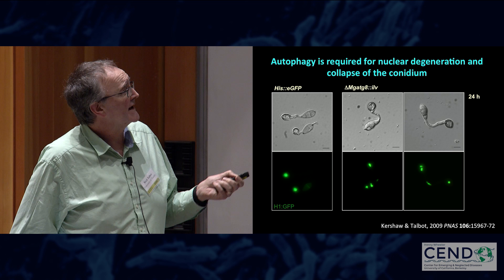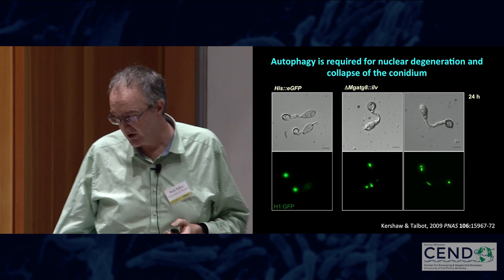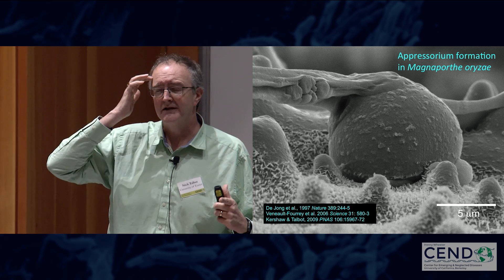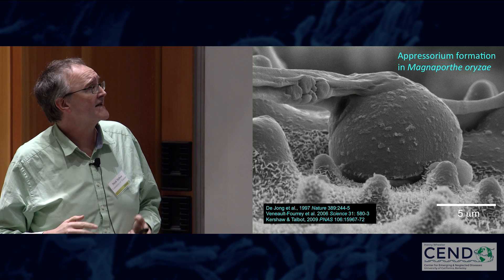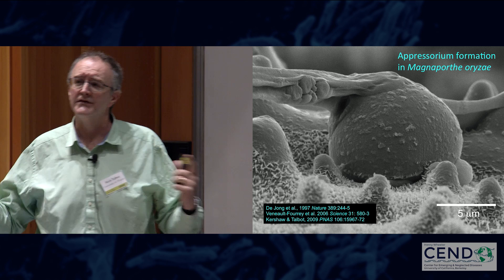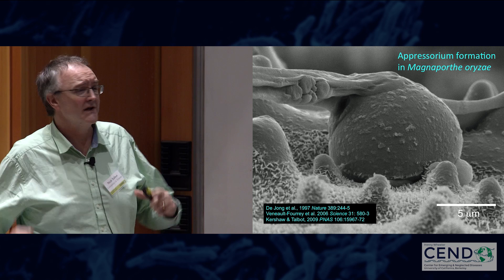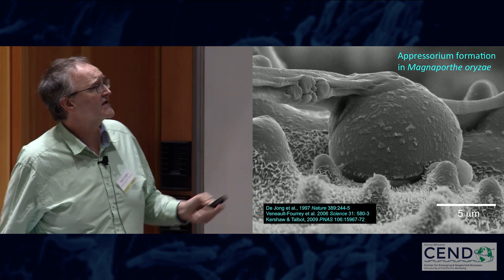This appressorium has to generate enormous turgor — up to 8 megapascals, so 80 bars of pressure, 40 times a car tire — an extraordinary pressure for a living cell to generate. It does that by accumulating polyols including glycerol to extraordinarily high concentrations, drawing water in by osmosis. The solute is prevented from leaving the cell because there's a thick melanin layer in the dome. It's a combination of solute generation and melanization that makes the appressorium able to generate such enormous turgor, which is applied as physical force to puncture the rice cuticle.